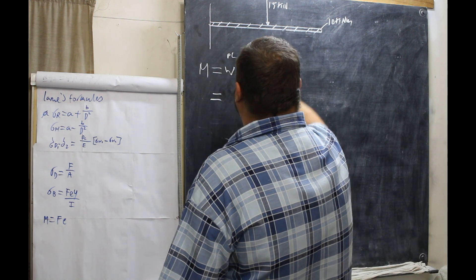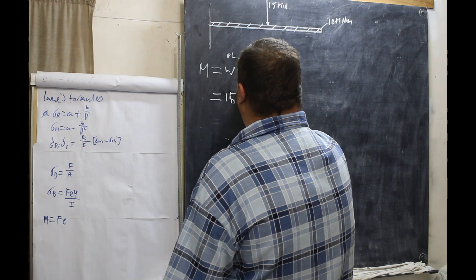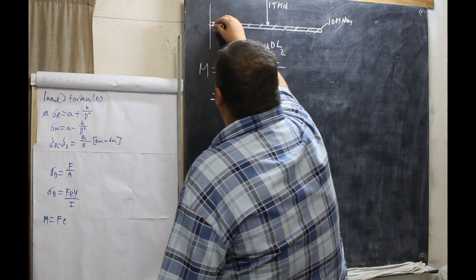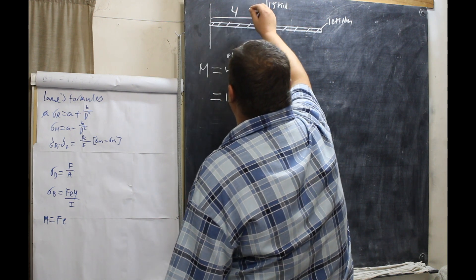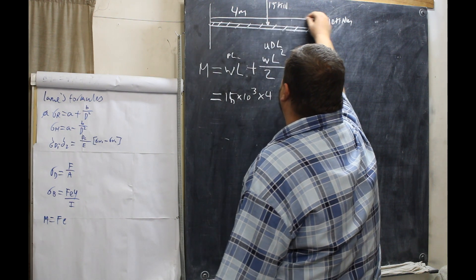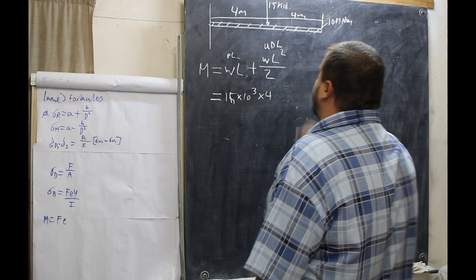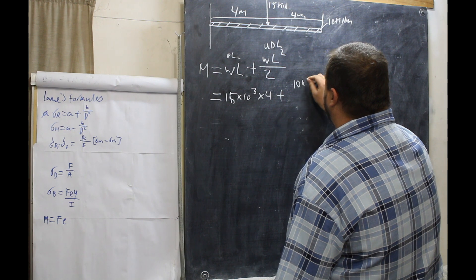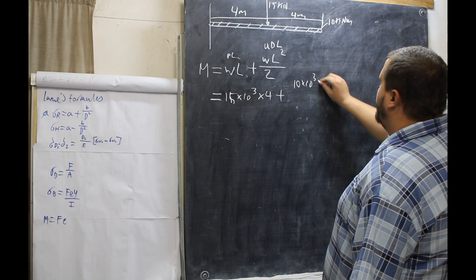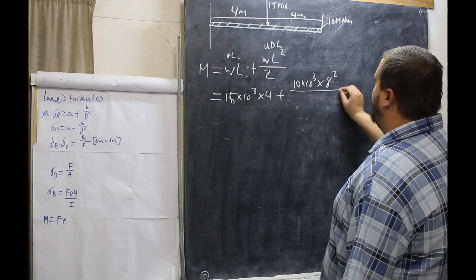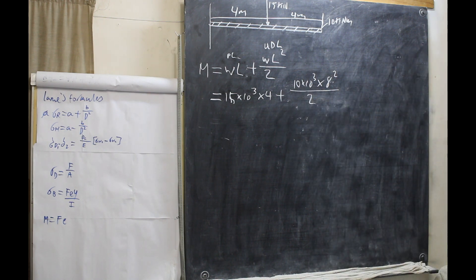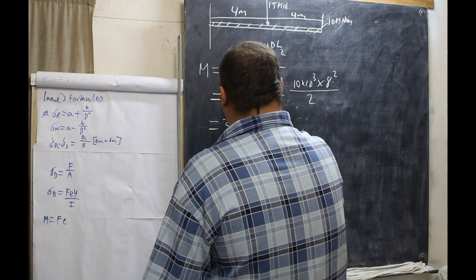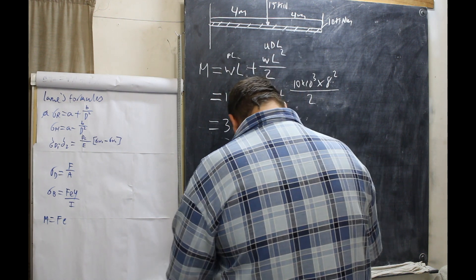So we have 15 kilonewtons, 15 times 10 to the 3 times L, which is 4, because from there to there is 4 meters. Now we have plus our 10 times 10 to the 3 times 8 squared all over 2. Now this will equal 380 kilonewton meters.